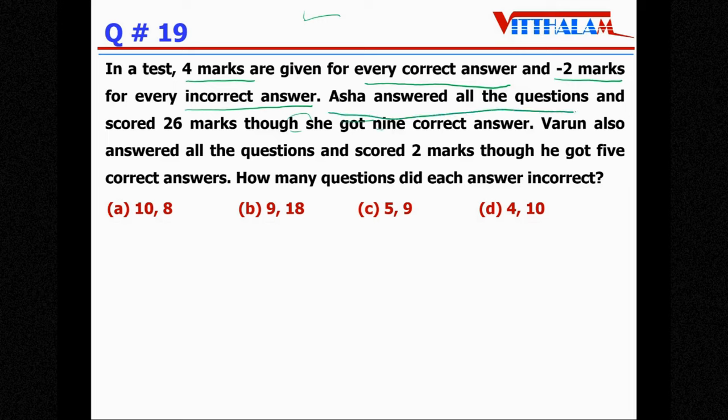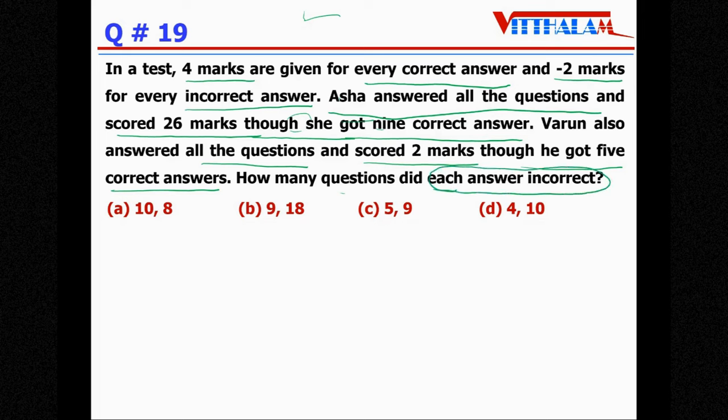Asha answered all the questions and scored 26 marks though she got nine correct answers. Varun also answered all the questions and scored 2 marks though he got five correct answers. How many questions did each answer incorrectly? So we have to find out the number of incorrect answers by Asha as well as Varun, so first let's talk about Asha.